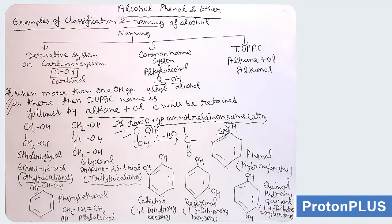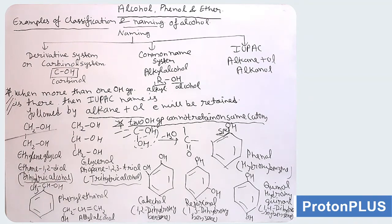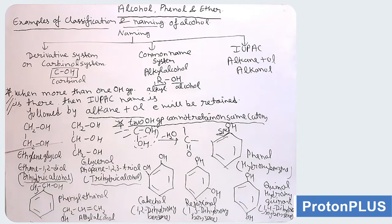Now we will take some examples of aromatic alcohol. In all the previous examples, the alcoholic carbon atom was SP3 hybridized because the carbon atom containing the OH group was a saturated carbon atom. Now, the first example of aromatic alcohol is phenol — a familiar compound. The OH group is directly attached to the benzene ring, and this benzene ring carbon atom is SP2 hybridized. So this is aromatic alcohol: phenol, or it can be named as hydroxybenzene — monohydric alcohol, as only one OH group is there.